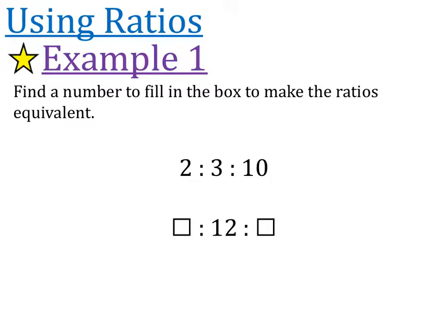Similarly, if there's 3 parts to the ratio, we would do the exact same thing. So we'd ask ourselves, how do we get from 3 to 12? And 3 to 12 is times by 4. So we can times the 2 also by 4, and we can times the 10 also by 4. So we times everything by the exact same number. So we get 8 to 12 to 40. So these two ratios are now equivalent to each other. 2 to 3 to 10 is the same as 8 to 12 to 40.